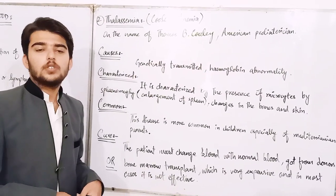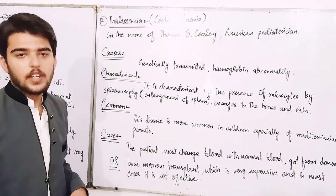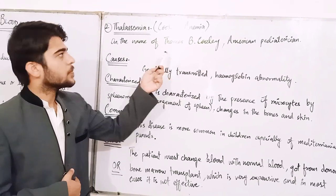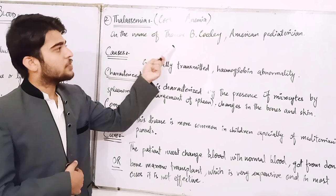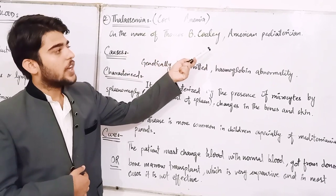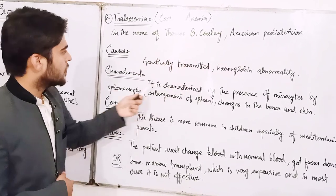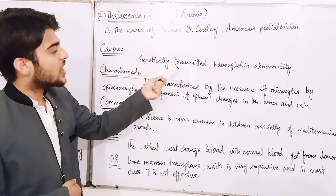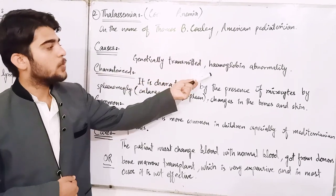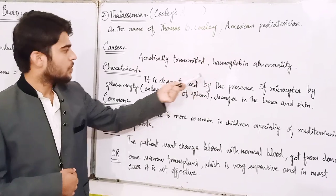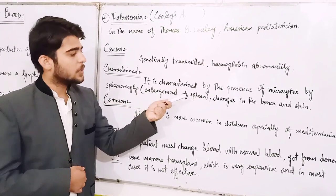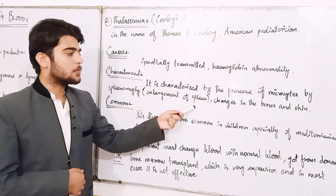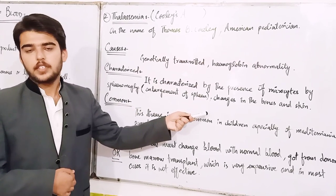The second type of disorder of blood is thalassemia. Thalassemia is also called Cooley's anemia, named after Thomas B. Cooley, an American pediatrician. It is caused by a genetically transmitted hemoglobin abnormality. It is characterized by the presence of microcytes, splenomegaly — enlargement of the spleen — and changes in the bones and skin.